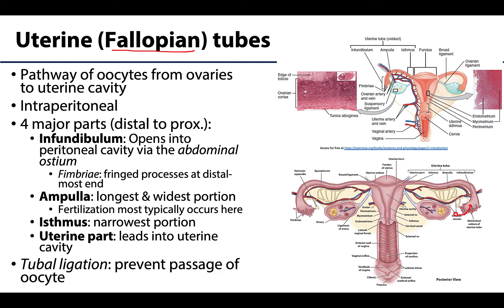Regions like the bladder and the rectum will be more subperitoneal, but the uterine tubes, the ovaries, and the uterus will be intraperitoneal. There are four major parts of the uterine tubes. Starting laterally, there is the infundibulum, which is supposedly trumpet-shaped and opens into the abdominopelvic cavity via the abdominal ostium. It is through this region that the oocyte enters the uterine tubes, guided by mucosal finger-shaped folds called fimbriae, which are attached to the distal end of the infundibulum.